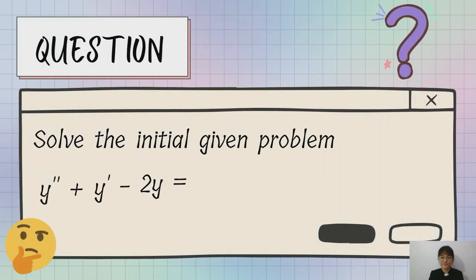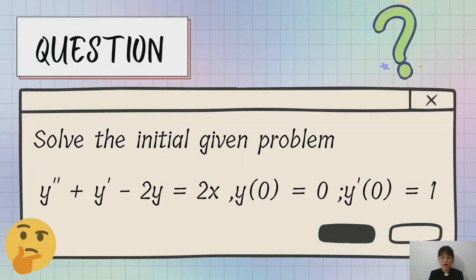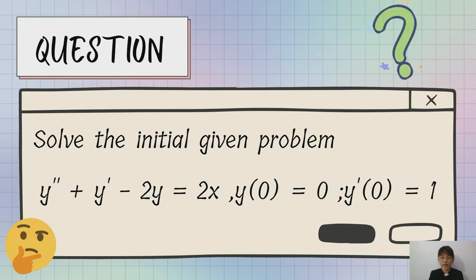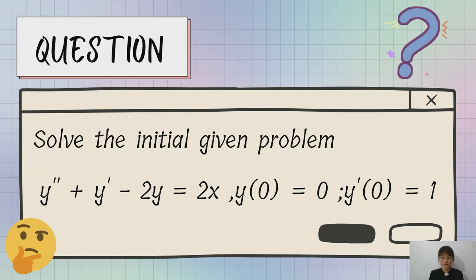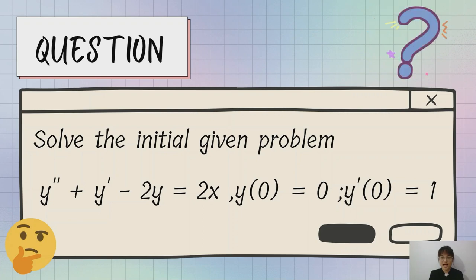This is our question for this assignment. Our question is to solve the initial value problem: y double prime plus y prime minus 2y equals 2x, with initial values y(0) equal to 0 and y prime(0) equal to 1. Our methods to solve this question are the undetermined coefficient method and the Laplace transform.